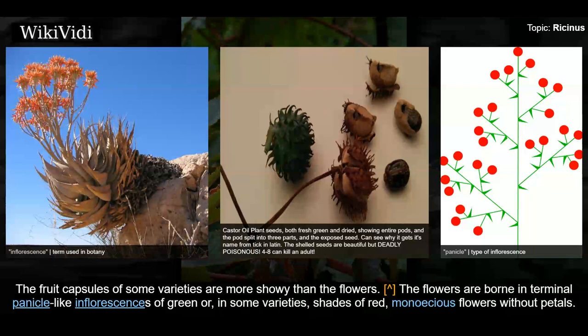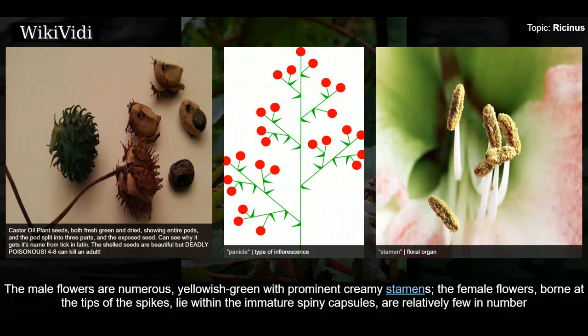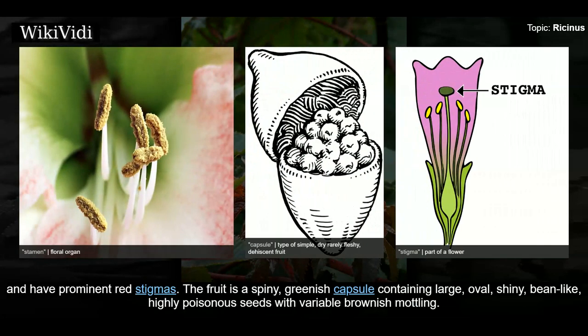The flowers are borne in terminal panicle-like inflorescences of green or, in some varieties, shades of red. They are monoecious flowers without petals. The male flowers are numerous, yellowish green with prominent creamy stamens. The female flowers, borne at the tips of the spikes within immature spiny capsules, are relatively few in number and have prominent red stigmas. The fruit is a spiny greenish capsule containing large, oval, shiny, bean-like, highly poisonous seeds with variable brownish mottling.